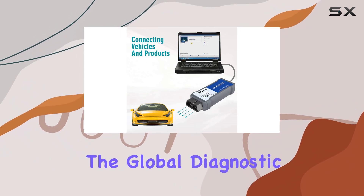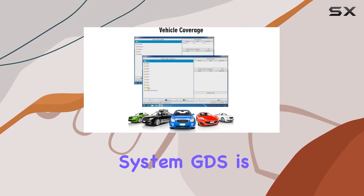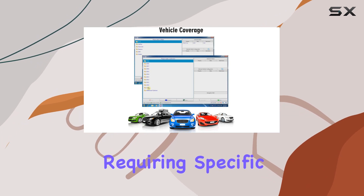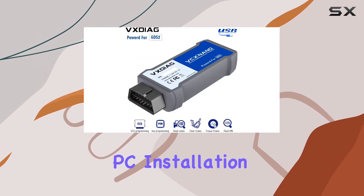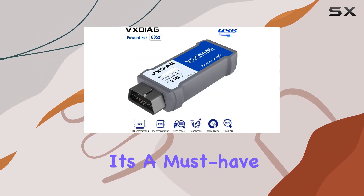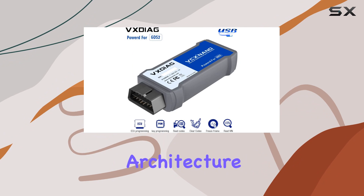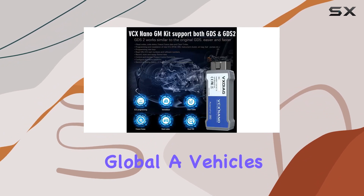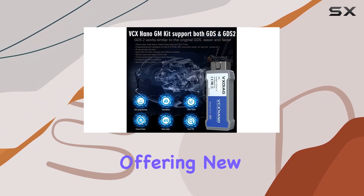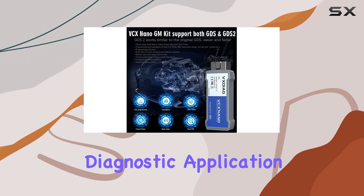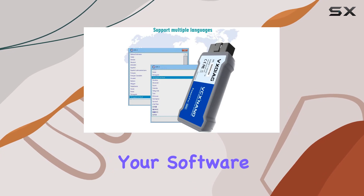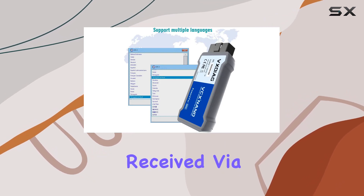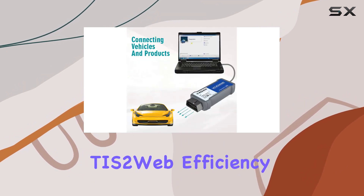The Global Diagnostic System (GDS) is another highlight, requiring specific PC installation. It's a must-have for GM global architecture Global A vehicles, offering new diagnostic application software. Keep your software up to date with convenient updates received via TIS2 Web.